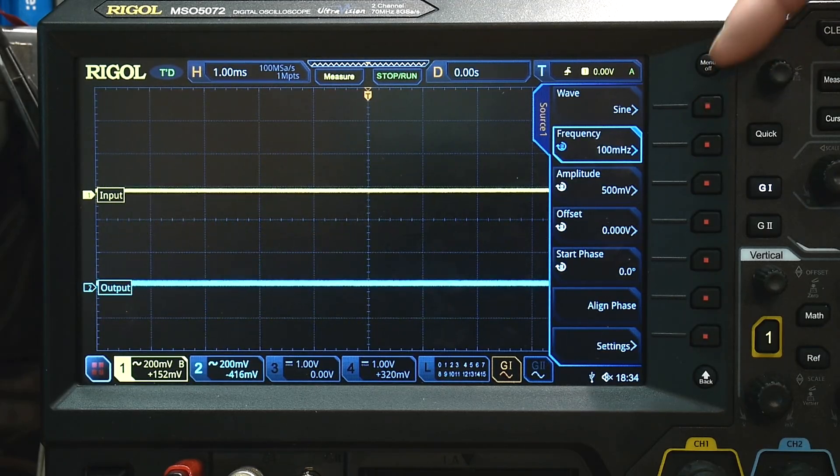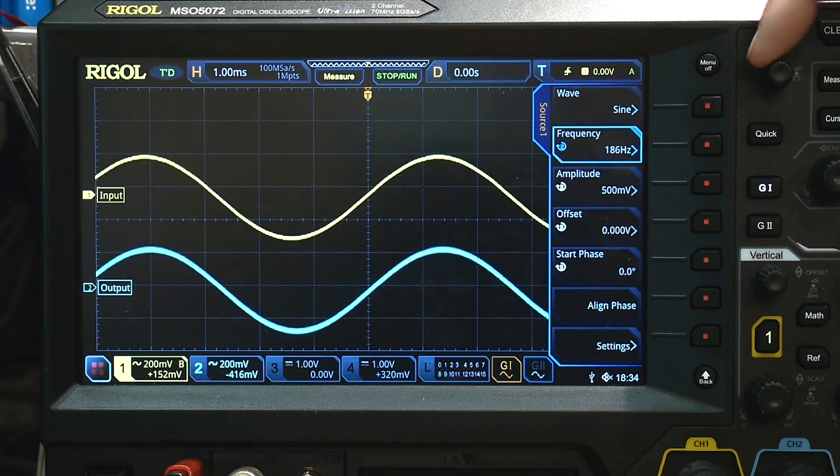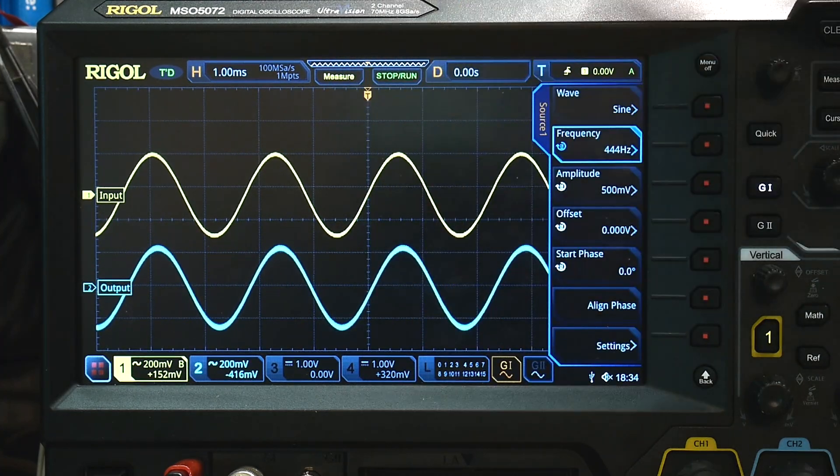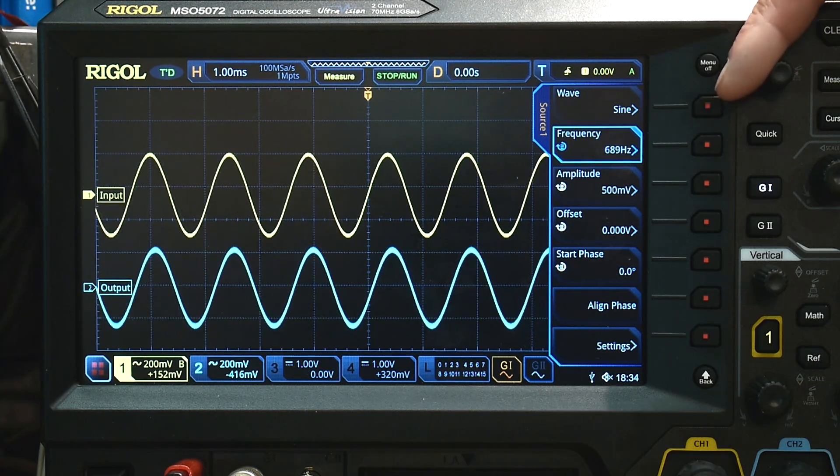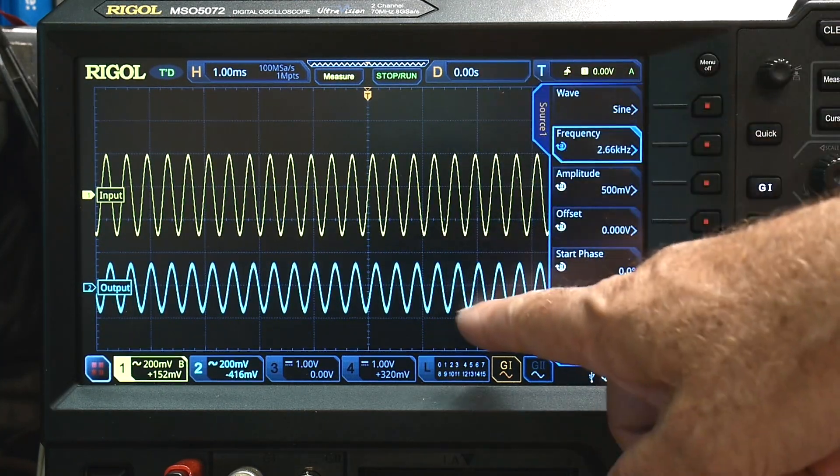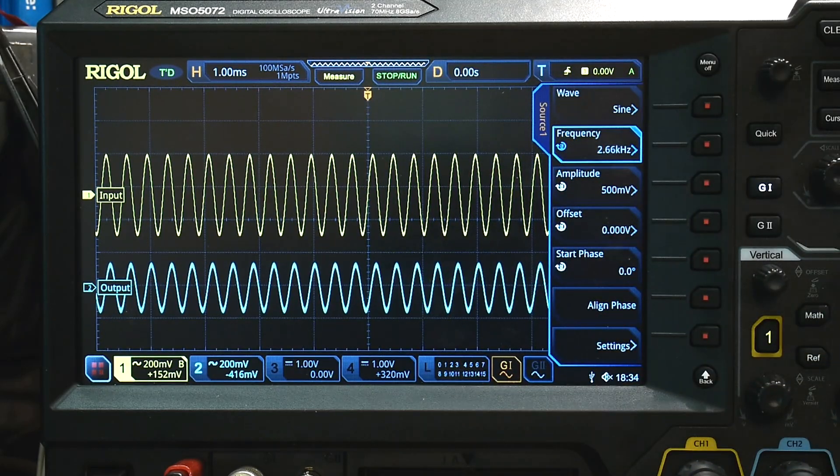And so you can see that at low frequencies, at low frequencies, the input and the output are the same size, and they're in phase. And as I go higher and higher, I'm going to go a bit higher, then the output is starting to drop down.